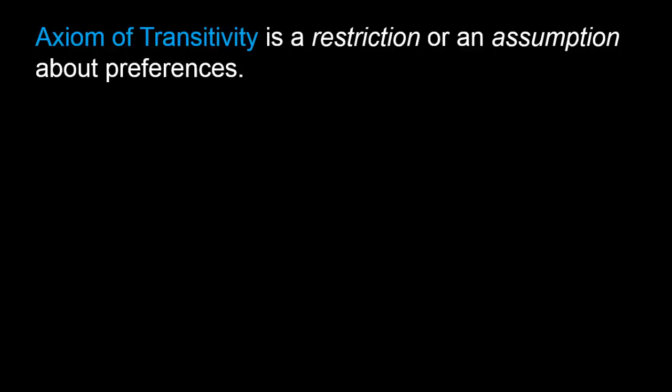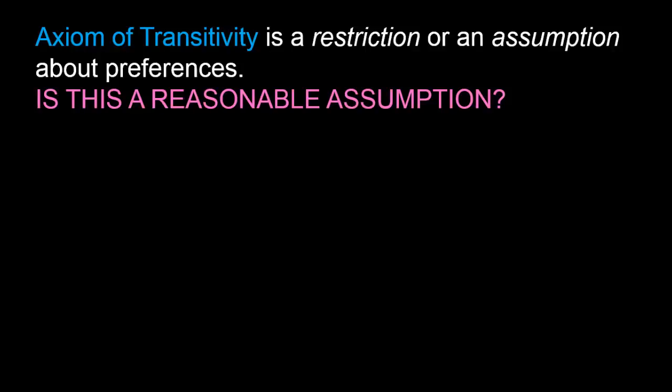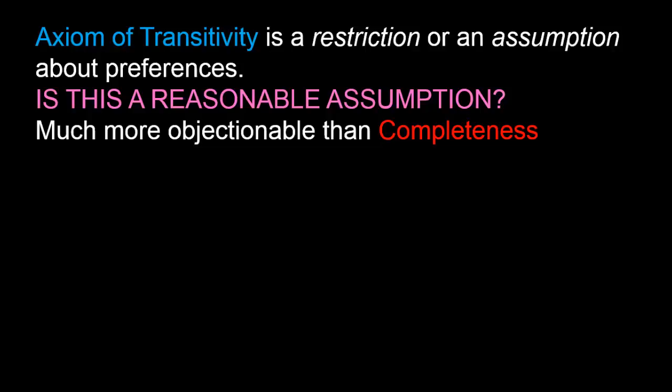Let's have a brief discussion about the axiom of transitivity. Just like the axiom of completeness, we can think of it as a restriction or assumption about preferences. And just like before, we can ask: is this a reasonable assumption? It turns out that it is generally regarded as a much less reasonable and much more objectionable assumption than the axiom of completeness, partly because violations of transitivity are quite often witnessed in the real world.